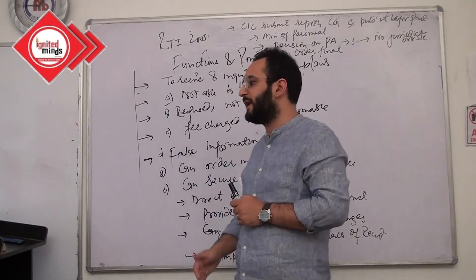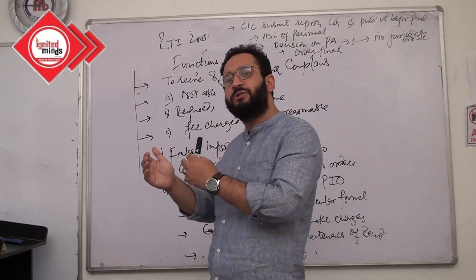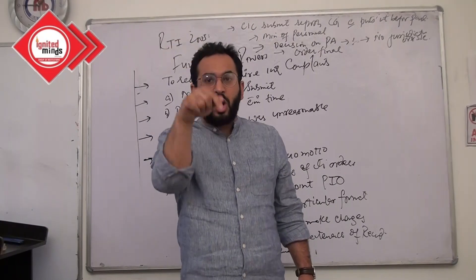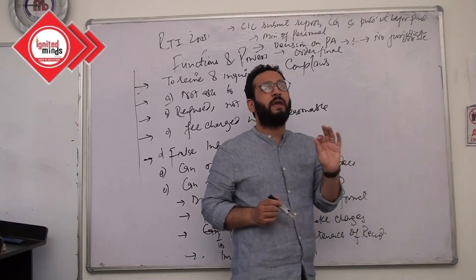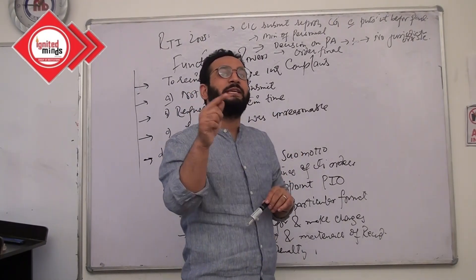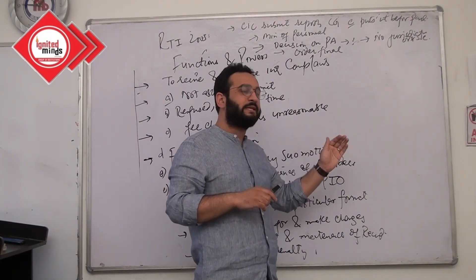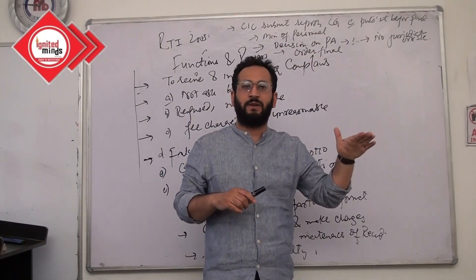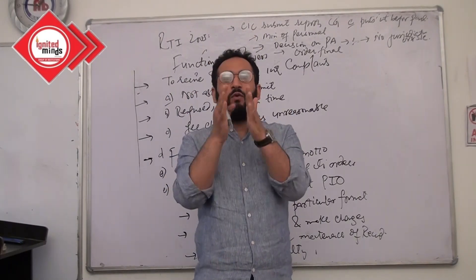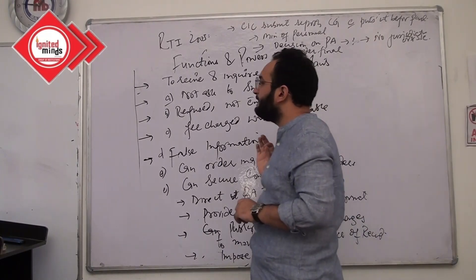Also remember that RTI clearly states that the CIC will not have any jurisdiction over the SIC. The CIC will not entertain any complaint or appeal against an order given by a State Information Commission. So the State Information Commission is a final authority at the state level — nothing to do with the centre — and the Central Information Commission is the final authority at the central level. You cannot appeal against SIC orders in the CIC; there is a clear watertight division of powers between CIC and SIC.